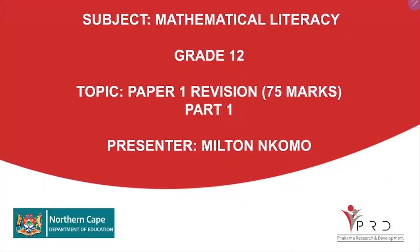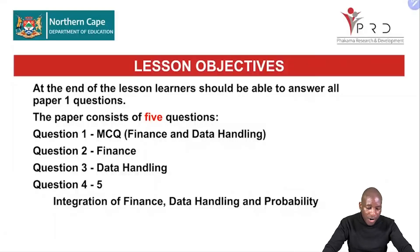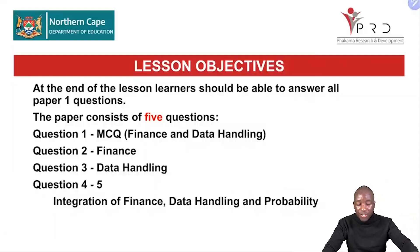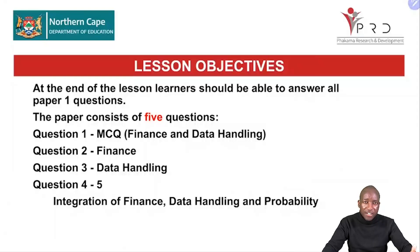Let's go through the objectives of the day. At the end of the lesson, you should be able to answer all Paper 1 questions. The paper consists of 5 questions. Question 1 is multiple choice questions on Finance and Data Handling. Question 2 is on Finance. Question 3 is on Data Handling. Questions 4 and 5 are an integration of Finance, Data Handling, and Probabilities.